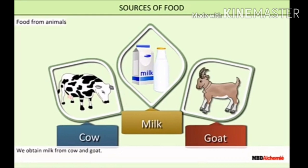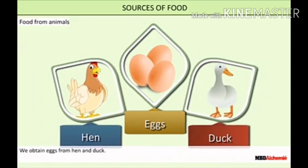Sugar that we eat every day is obtained from plants like sugarcane and beetroot or sugar beet. Milk, meat, and eggs are obtained from animals. So we can say animals are also a source of food, as they provide us milk, meat, and eggs. We obtain milk from cow and goat, and we obtain eggs from duck and hen.